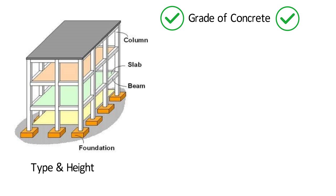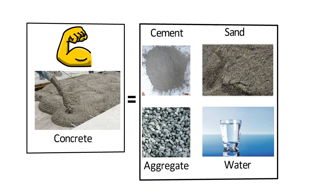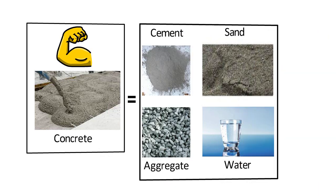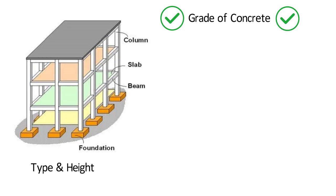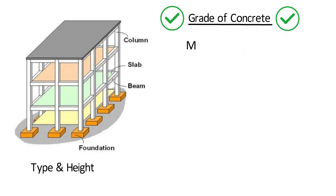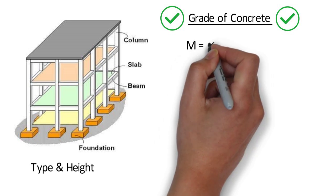Grade of concrete is nothing but the strength of concrete of that particular mix — i.e., a mixture of cement, sand, aggregate and water — in 28 days. Grade of concrete is denoted by M, and M stands for mix.